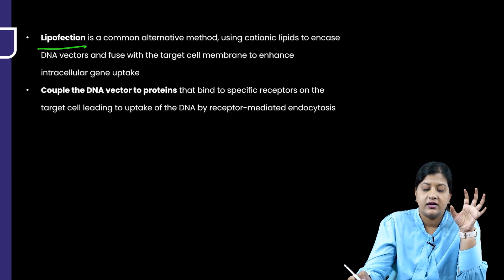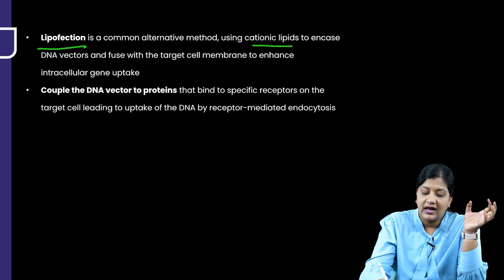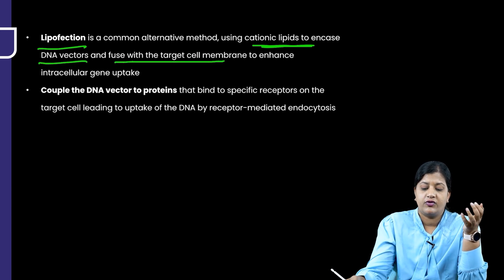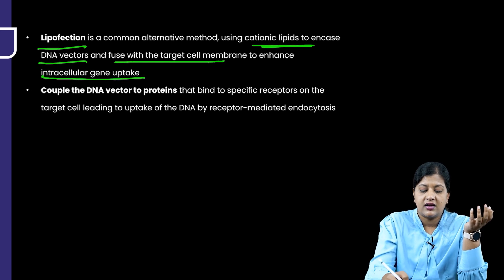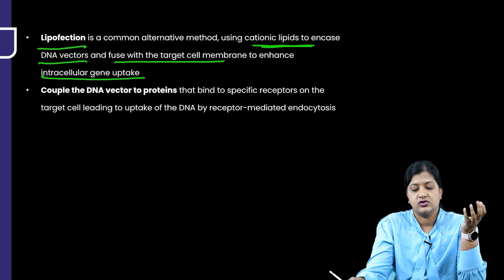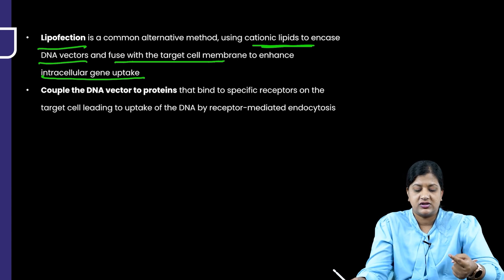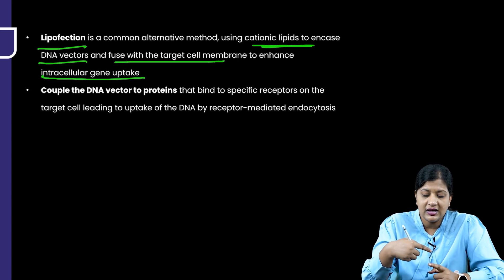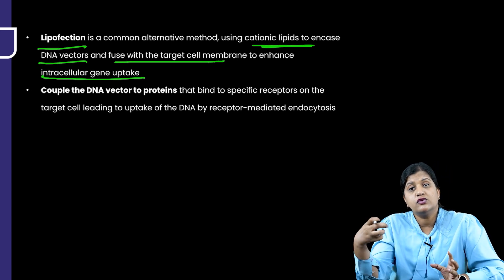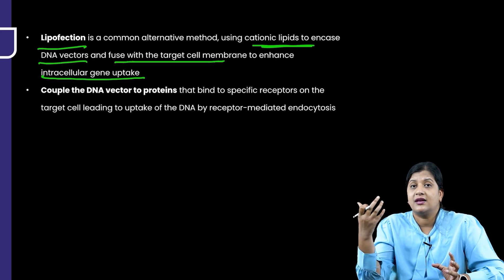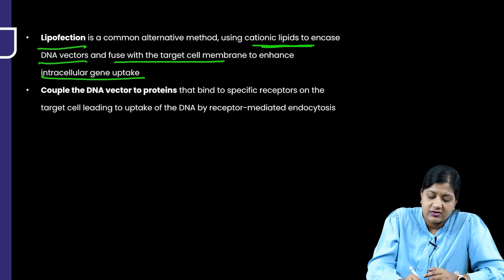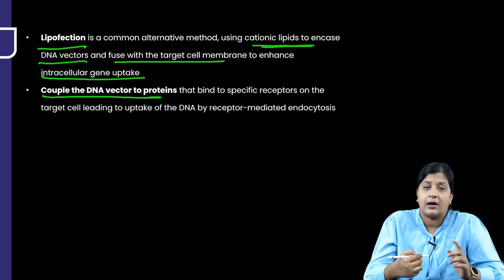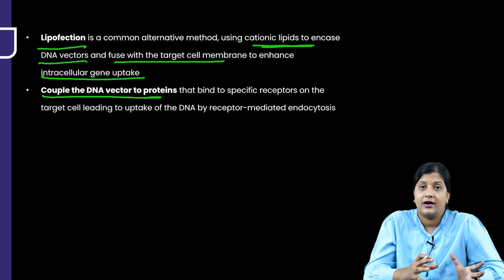Lipofection is an alternative method using cationic lipids to encase the DNA vectors and fuse them with the target cell membrane, enhancing intracellular gene uptake. The cationic lipids encasing the DNA vectors fuse with the target cell, resulting in increased gene uptake.